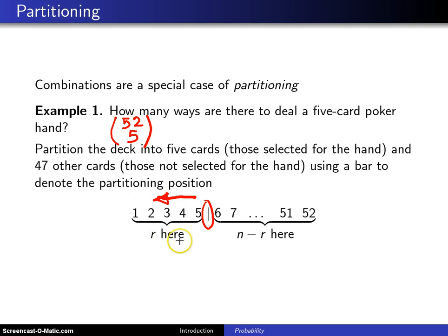And so here are the five that were in the hand, and here are the 47, six through 52, that were not in the hand.